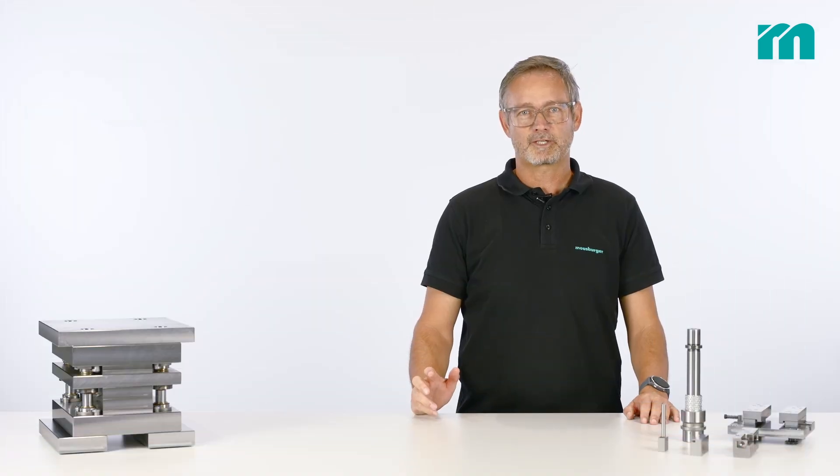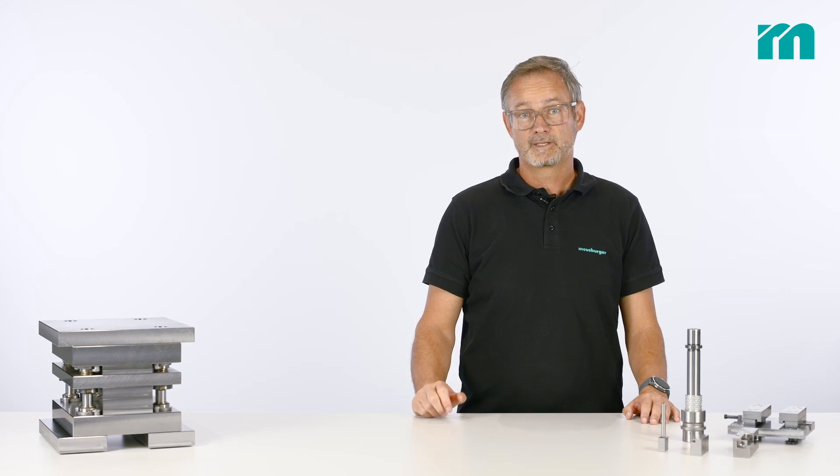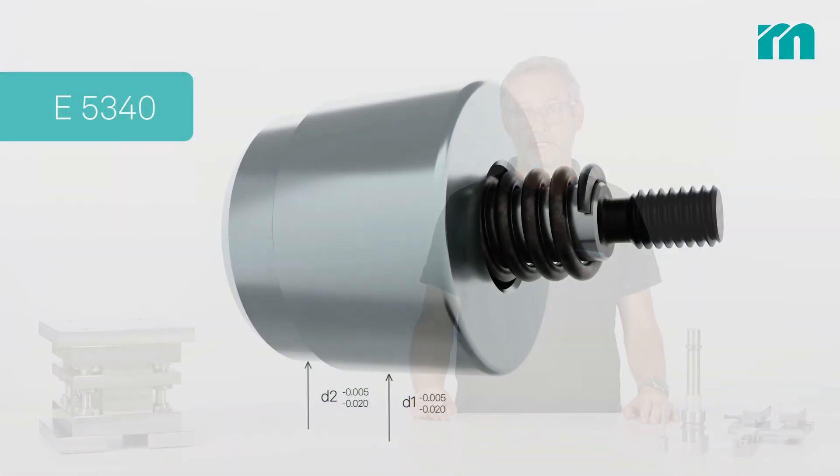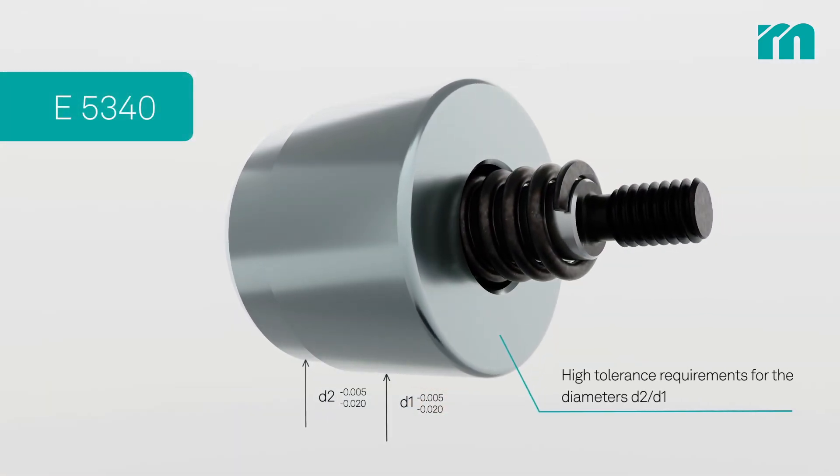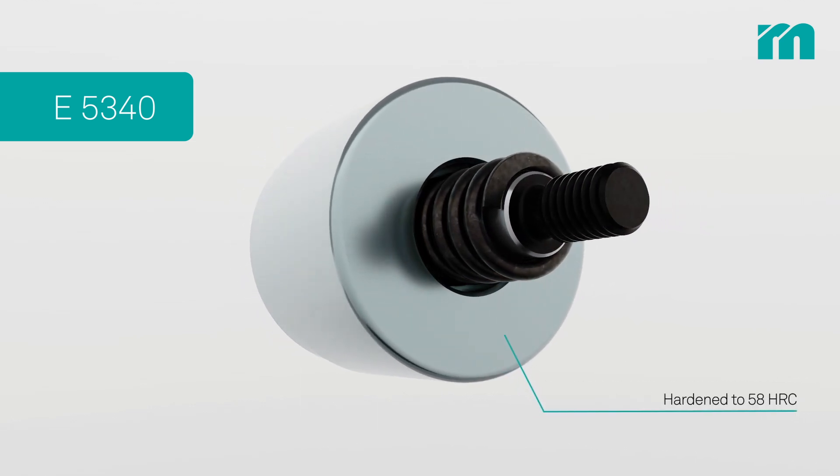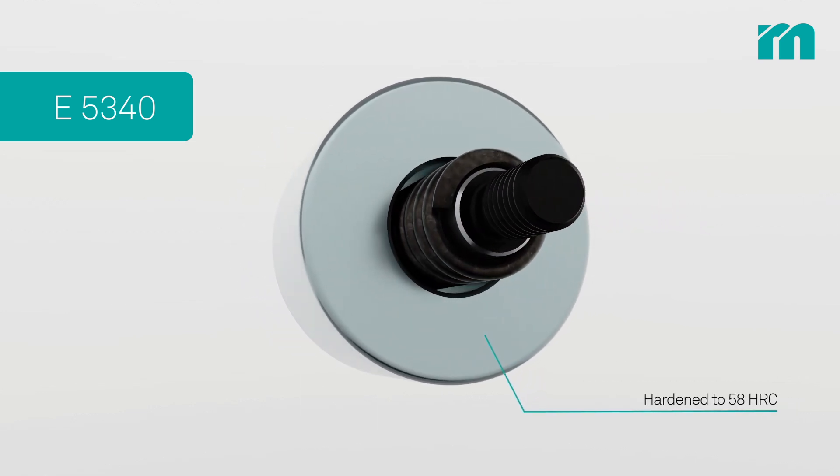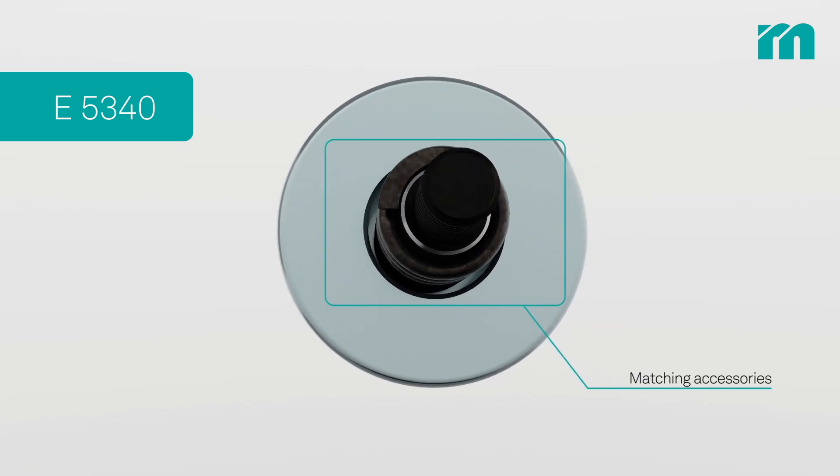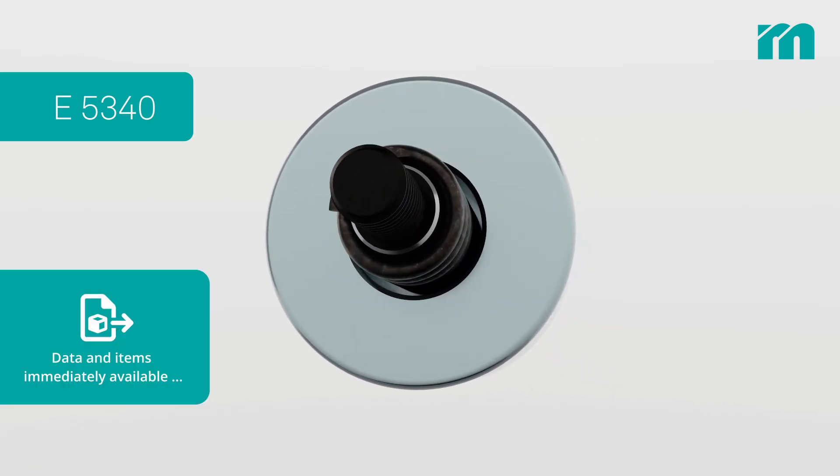Decreasing manufacturing costs of a classic component: centering unit from Moisburger E5340. High tolerance requirements for the diameters D2, D1, hardened to 58 HRC. Matching accessories, data and items immediately available.